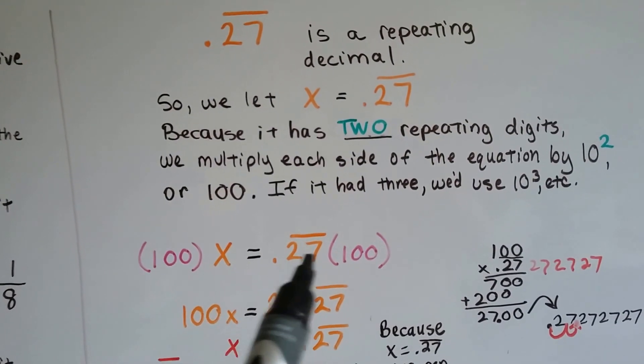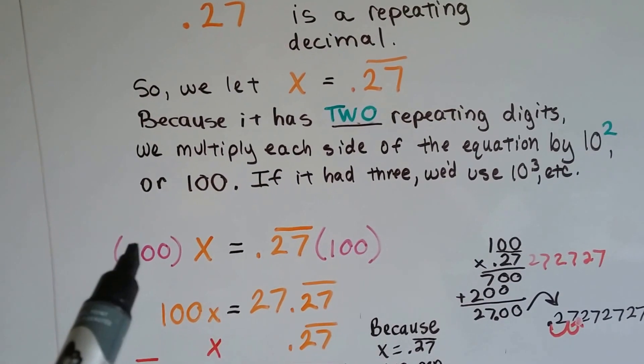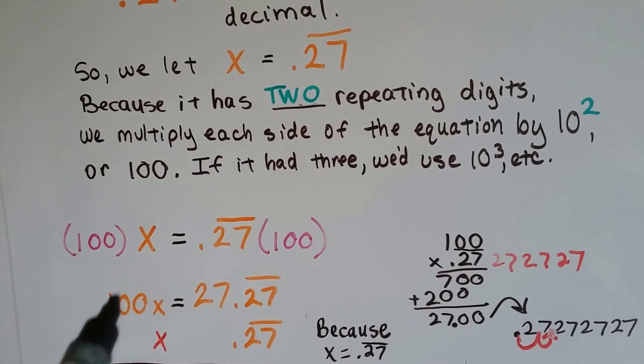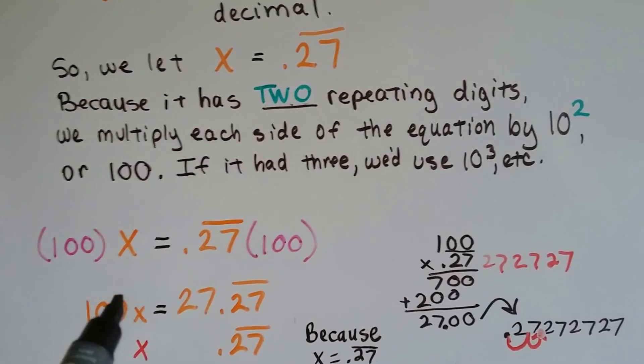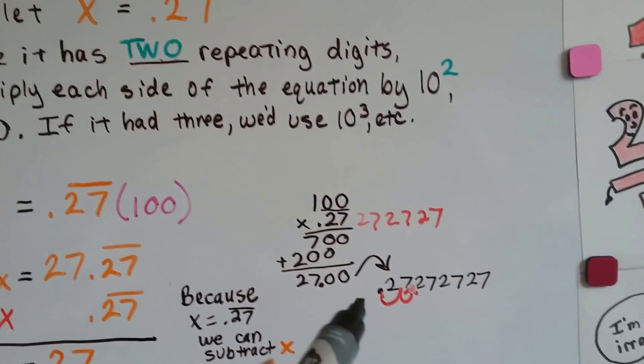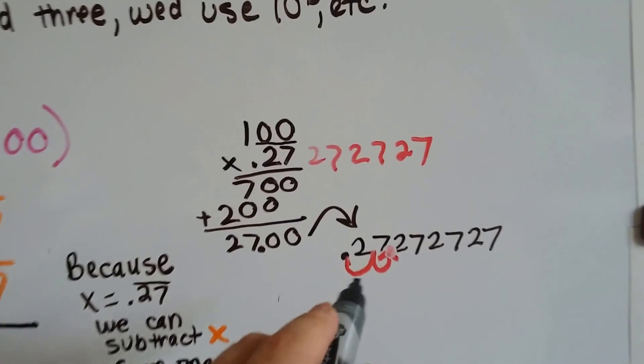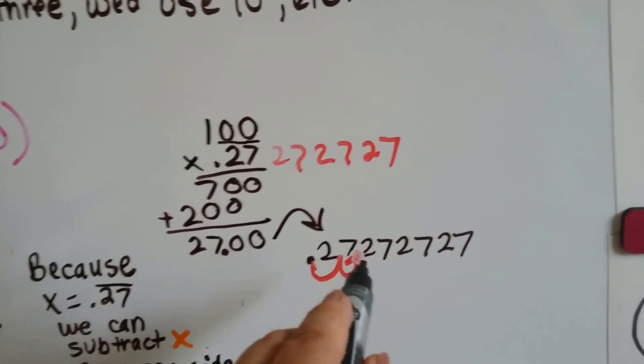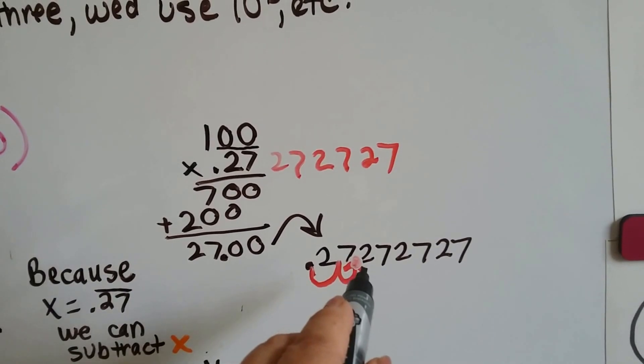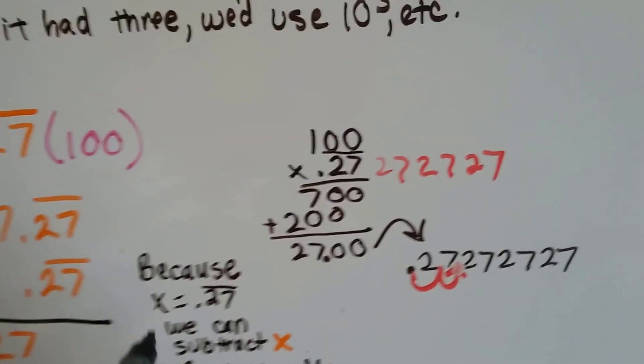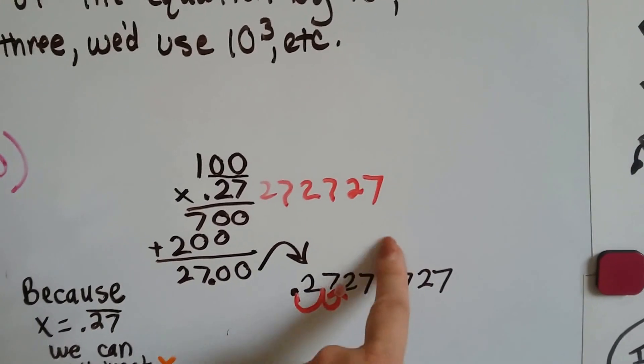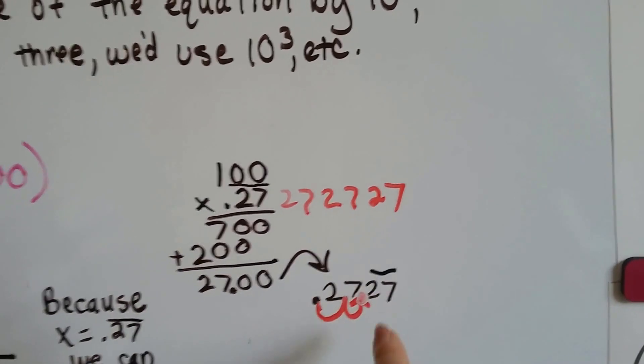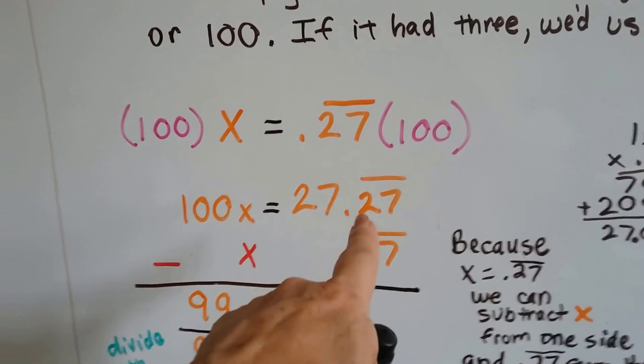We're going to multiply both sides by 100. When we multiply this side, 100 times x gives us 100 x's. 100 x. When we multiply this side by 100, all we're doing is moving the decimal place back two spots. So, now it's 27.27272727. And what we do is, instead of writing all these two sevens, we stop it here and just put our bar over these two. So, now we've got 27.27.